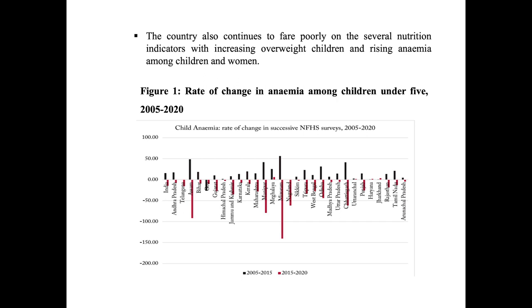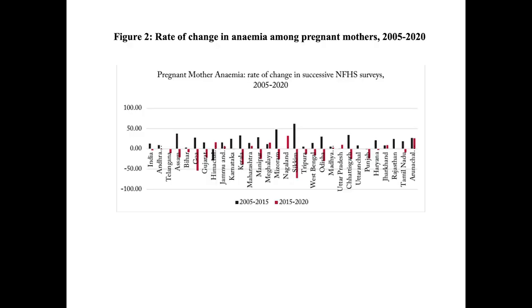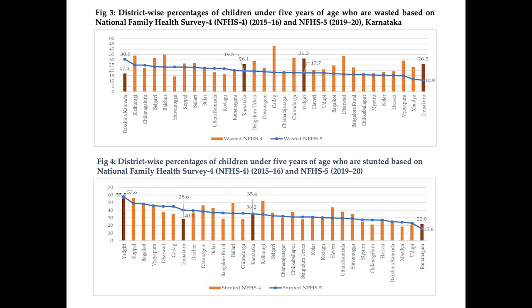India has also performed very poorly on other health indicators. Over time, conditions of anemia among children and mothers have worsened. A similar trend is found for Karnataka. While Karnataka has performed very well economically — being one of the top five states with a per capita GSDP of 3.05 lakhs — the NITI Aayog Health Index 2021 shows Karnataka doesn't even fall in the group of top five performers in the health sector. Between NFHS-4 and NFHS-5, the percentage of stunted, wasted, and underweight children declined slightly, but anemia among children and women increased.